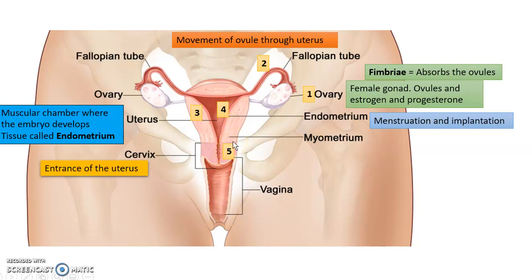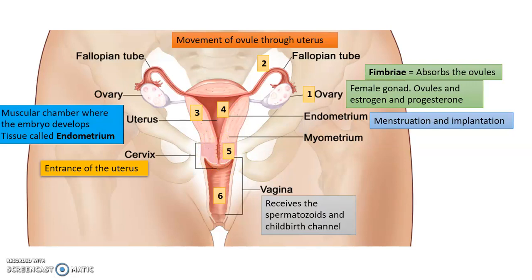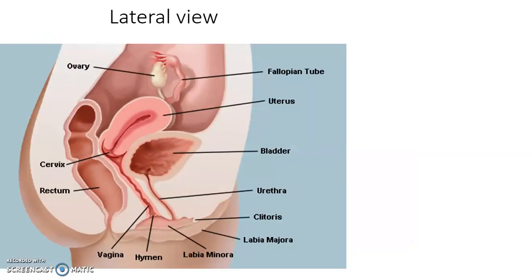The cervix is the entrance of the uterus — it is a strong ring of muscle that keeps the embryo, fetus, or baby inside the uterus. It provides a secure place for the embryo to develop. The next part is the vagina, which has the function of receiving spermatozoids and also serving as the childbirth channel — this is where the baby must pass through during the delivery process.